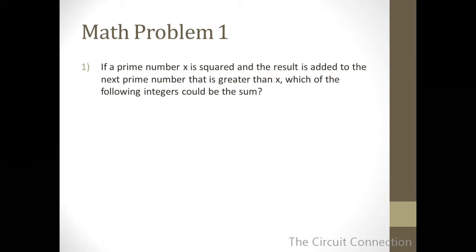If a prime number x is squared, and the result is added to the next prime number that is greater than x, which of the following integers could be the sum? And these are your answer choices. These numbers consist of a range from 2 to 69. So, again, if a prime number is squared, and the result is added to the next prime number that is greater than x, which of the following integers could be the sum?